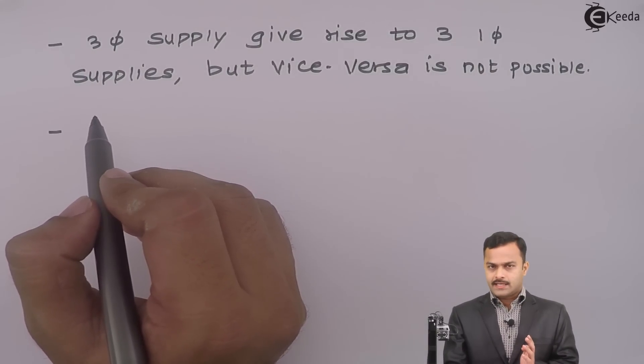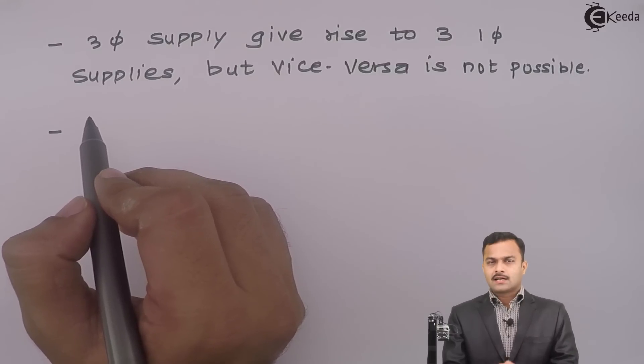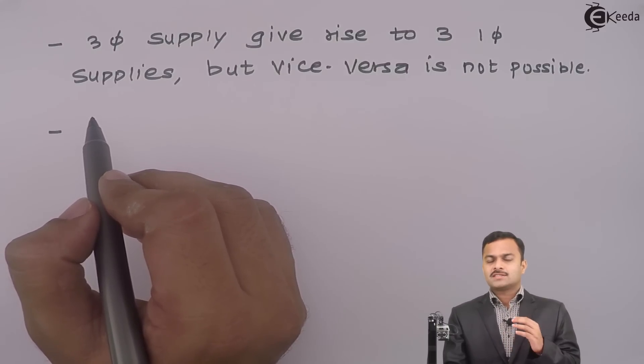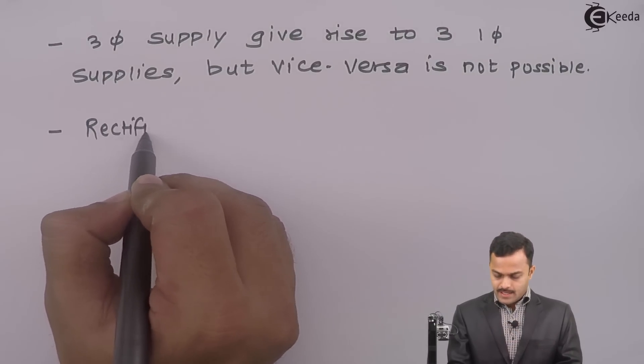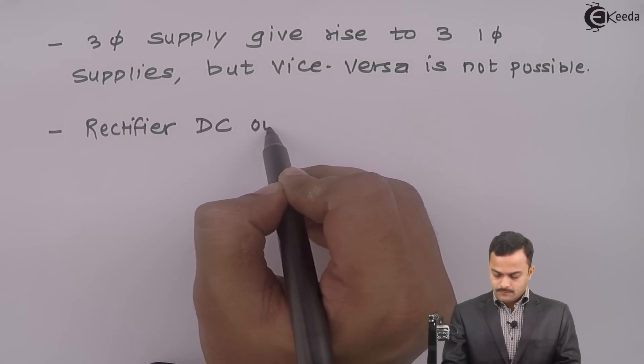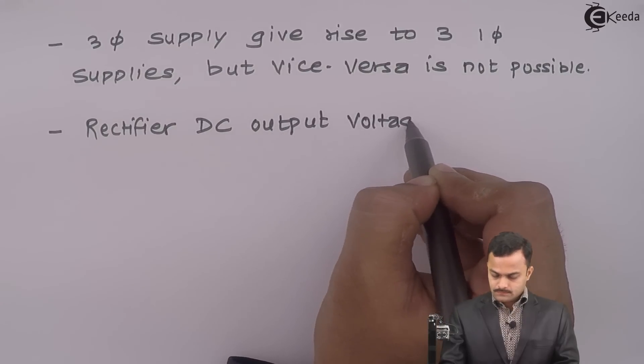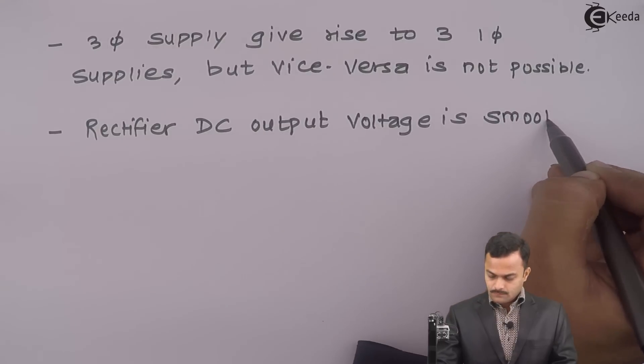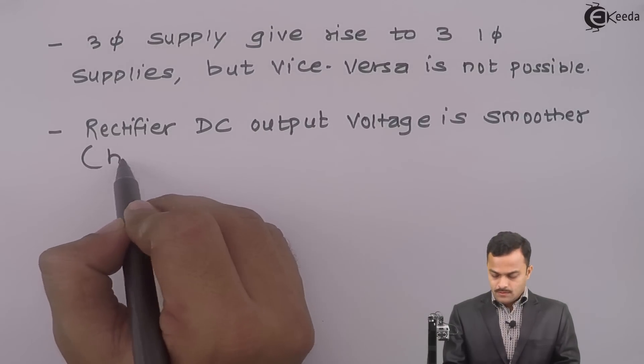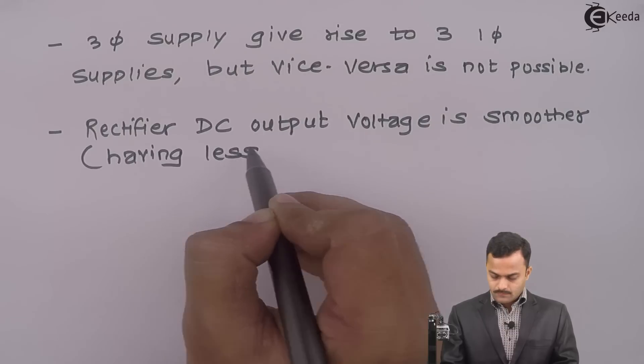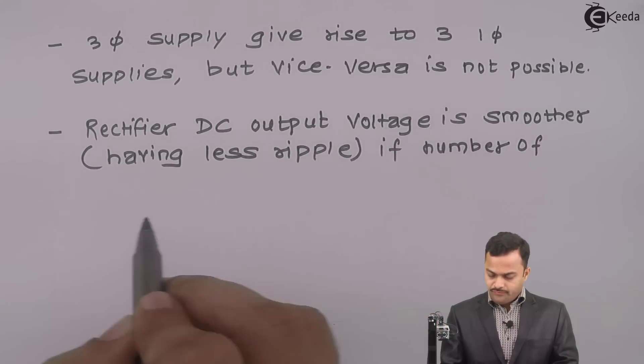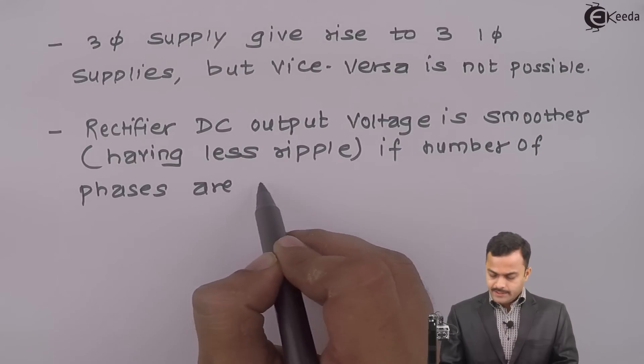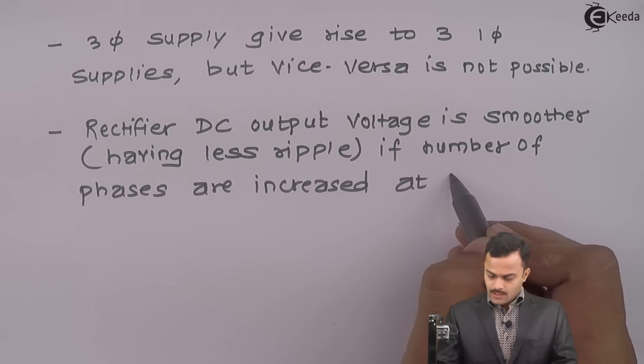Next advantage is, suppose I am converting this three phase supply into DC. The DC I will get is much more smoother than that of a single phase supply DC. What does that mean? Ripple will be very low. So, rectifier DC output voltage is smoother, having less ripple, if number of phases are increased at the supply side.